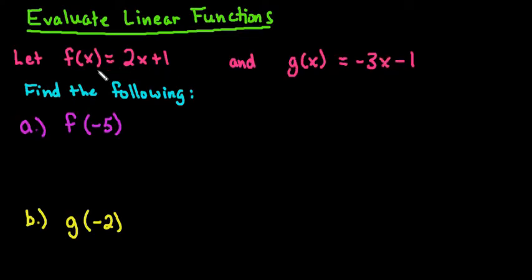I have been given two functions: f(x) = 2x + 1 and g(x) = -3x - 1. When it asks you to evaluate, all it's asking you to do is take and plug in the number that they give you for the variable in the equation.